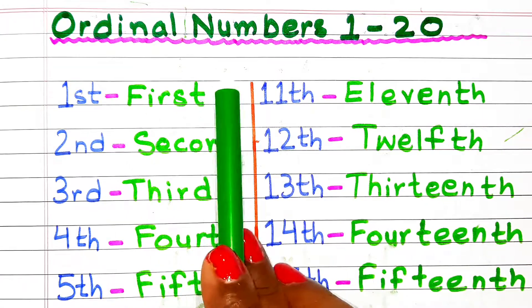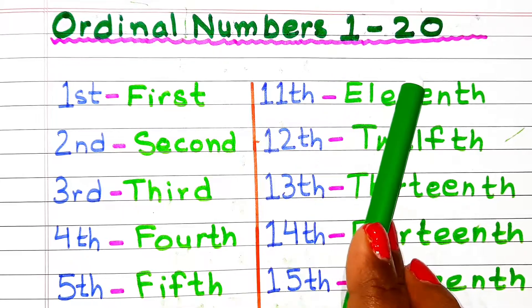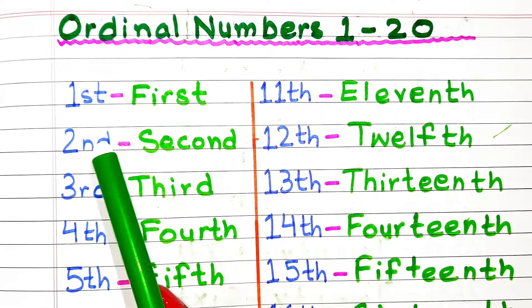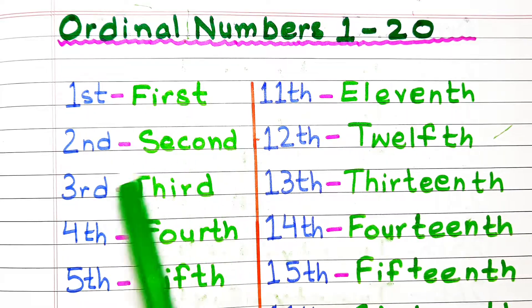Let's begin this video with ordinal numbers from 1 to 20. For spelling you can pause the video. First, second, third.